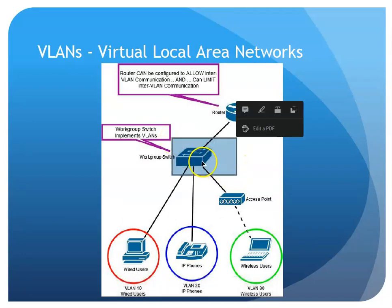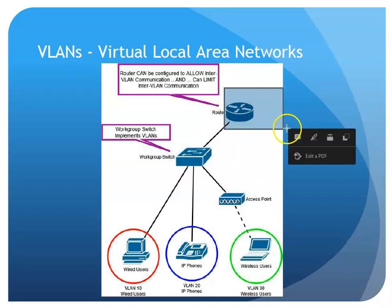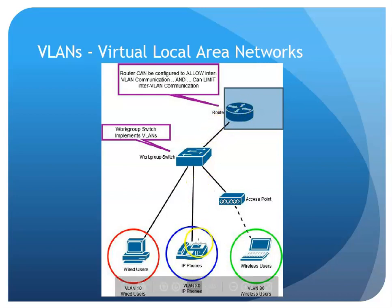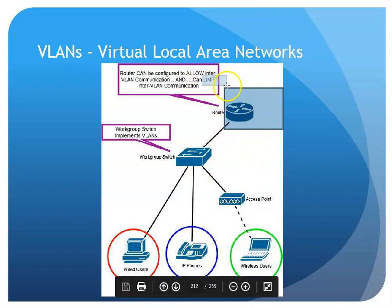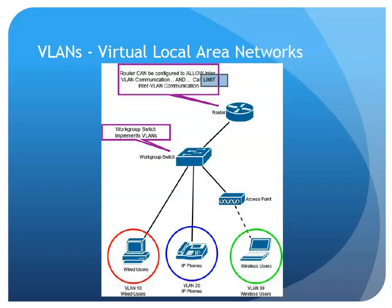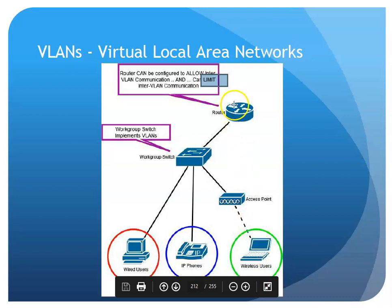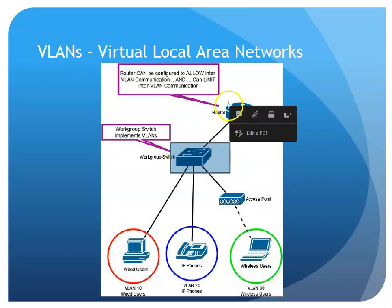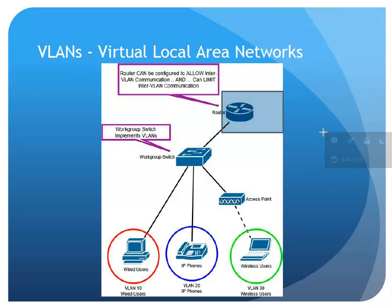What typically gets done is we separate these groups at the switch level with VLANs and program the router to understand those VLANs. As traffic moves from the switch up to the router, we can configure it to allow communication to another VLAN or put rules in to limit that — for example, saying a wireless user cannot communicate over to the wired VLAN. Adding the router, putting the VLANs on to separate traffic, passing it to the router, and programming the router to say yes you can communicate, or no you can't. This is called inter-VLAN routing.